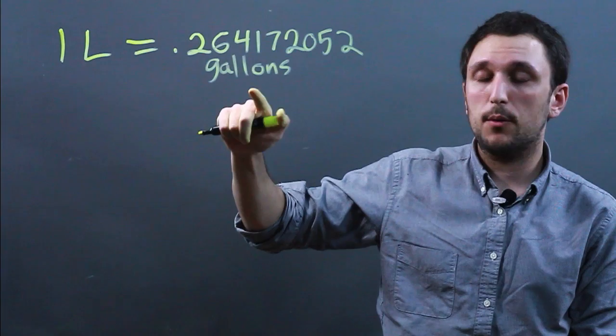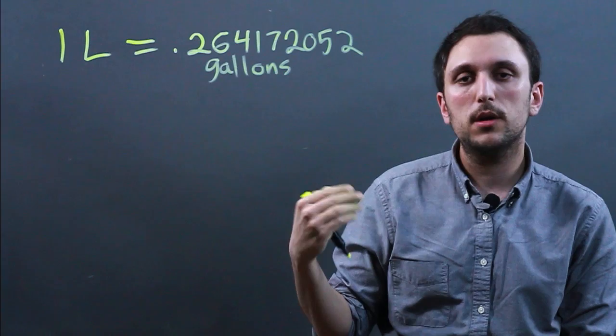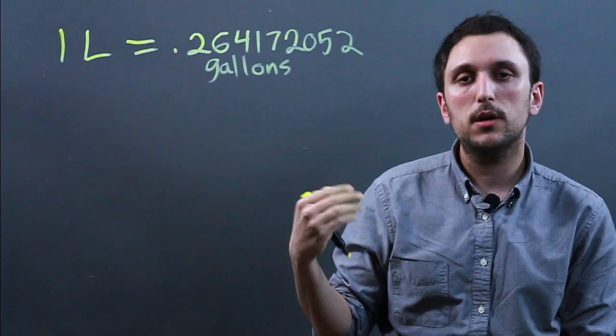So when we're saying one liter per hour, that would be 0.264172052 gallons per hour. But you're probably not looking for one liter per hour or one gallon per hour.